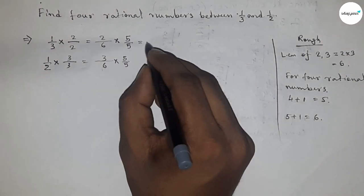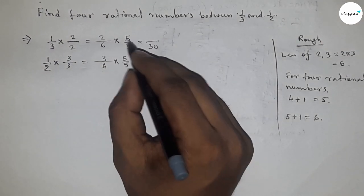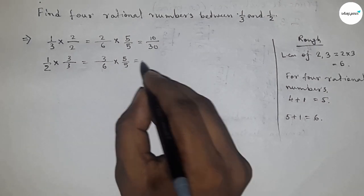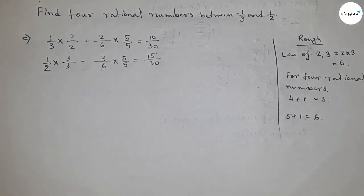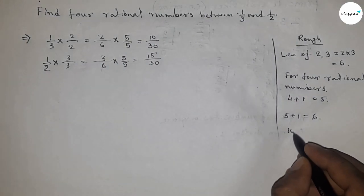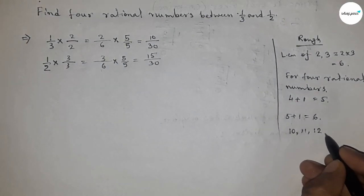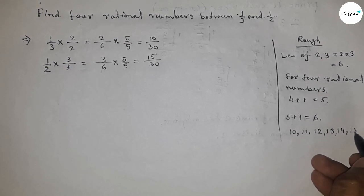So between 10 and 15, we have 10, 11, 12, 13, 14, and 15. By this, we can form rational numbers.